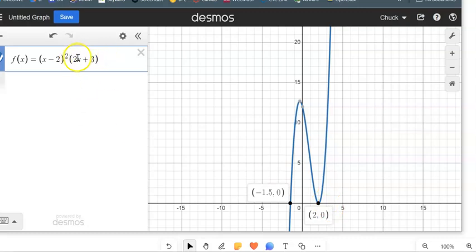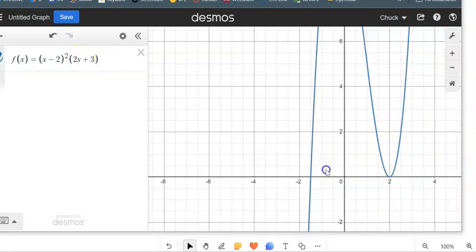Now this negative three halves, this makes a lot of sense to me. This is just like a little linear piece, right? Two x minus three. And if you zoom in really close on that zero, it makes what looks like a straight line.